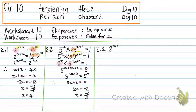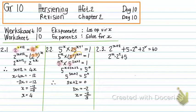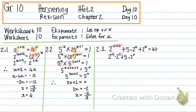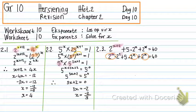Number 2.3: 2 to the power of X plus 2, plus 5 times 2 to the power of X, plus 2 to the power of X, equals 40. I split the exponent: 2 to the power of X plus 2 becomes 2 to the power of X times 2 to the power of 2, plus 5 times 2 to the power of X, plus 2 to the power of X equals 40. Now I find a common factor of 2 to the power of X, since each term has it. Taking it out: 2 to the power of X, and inside the bracket I'm left with 2 squared plus 5 plus 1.